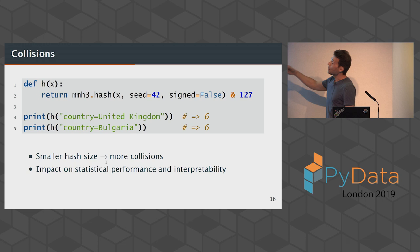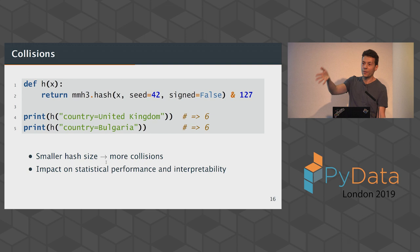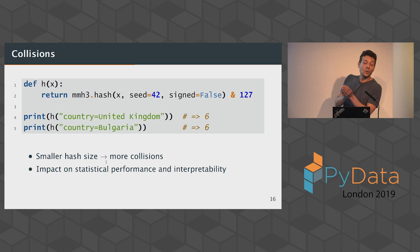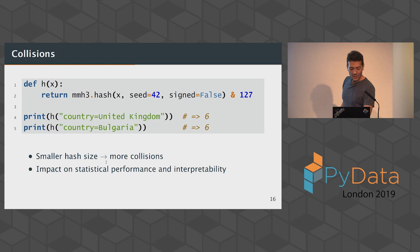The other thing you lose is interpretability. In linear models, you'd have a coefficient for UK and can see the effect when country equals United Kingdom. With feature hashing you can't, because that coefficient at index six corresponds to multiple countries — I think another seven countries hash to the same bucket. So it's a large bucket containing a collection of things.